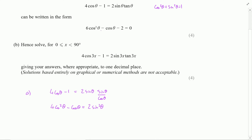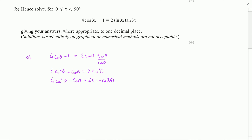The equation doesn't involve sinθ anymore, so I'll use the second identity to say that sin²θ = 1 − cos²θ and make that substitution. This becomes 4cos²θ − cosθ = 2(1 − cos²θ). Expanding, the left stays the same and the right gives 2 − 2cos²θ. Moving everything to the left gives 6cos²θ − cosθ − 2 = 0, which was what was required.